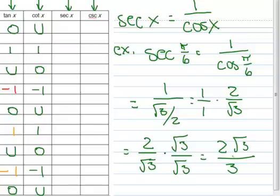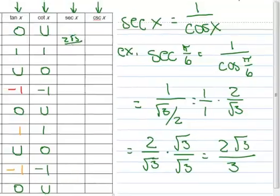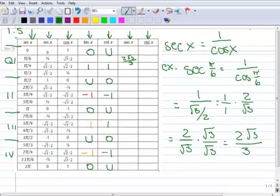So the secant of pi over 6 is 2√3/3. You can use symmetry to fill in the other values on your own.